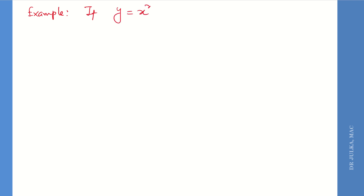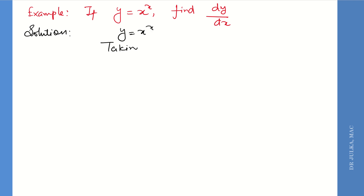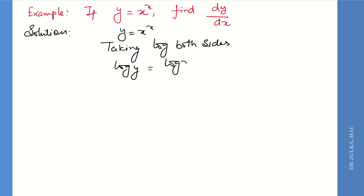Example 1: If y equals x raised to the power x, find dy/dx. Because here we have a function raised to the power of a function, we will take log of both sides. So log y equals log of x raised to the power x. We know that log m raised to the power n is n log m, so log y equals x log x.